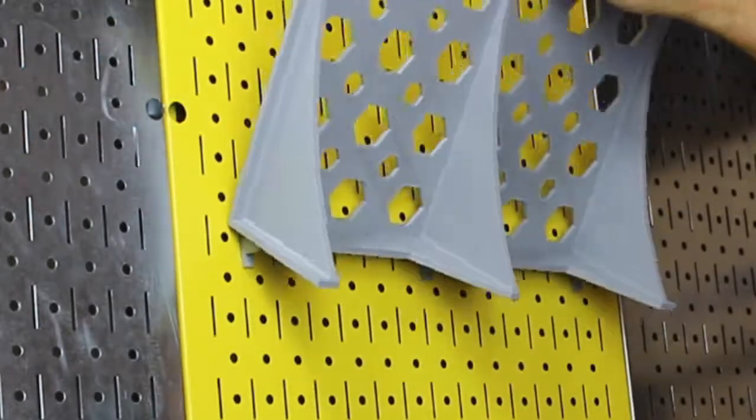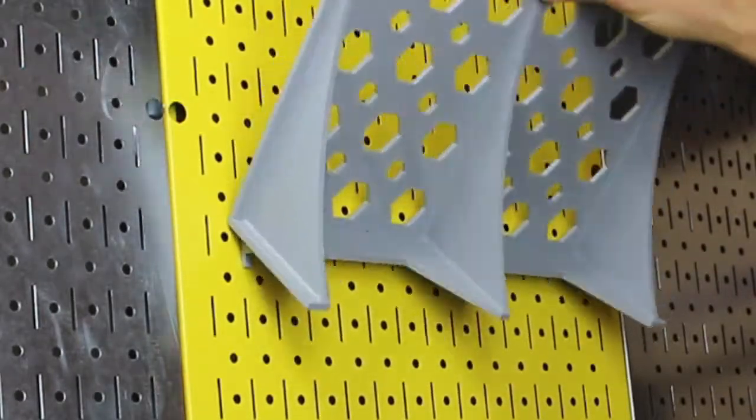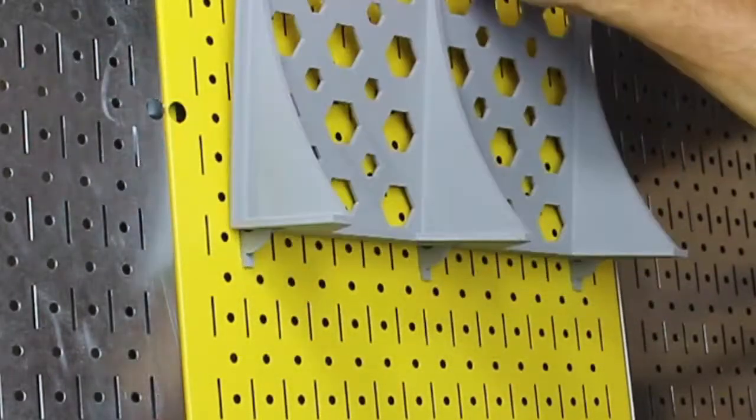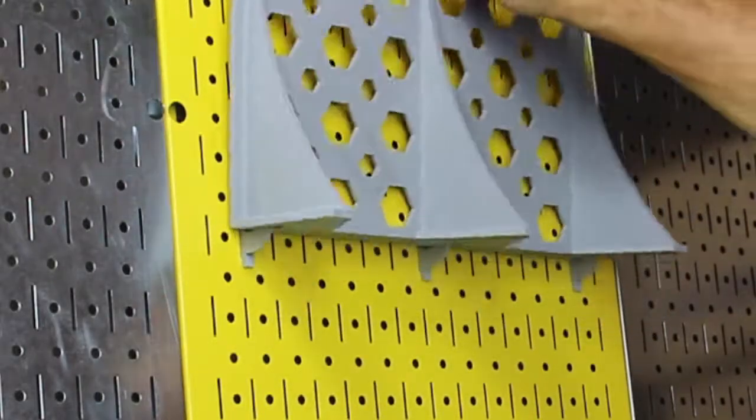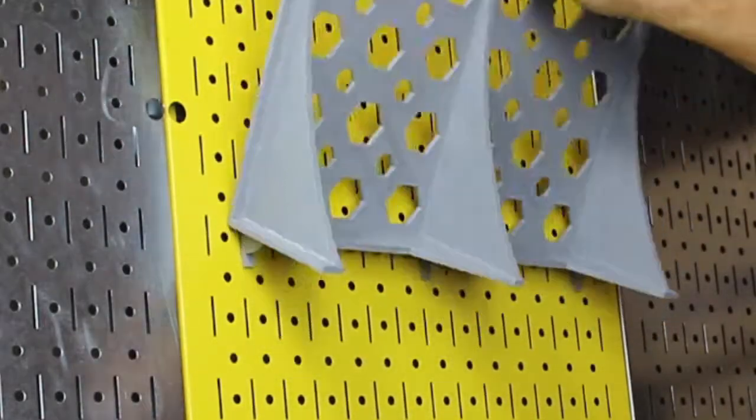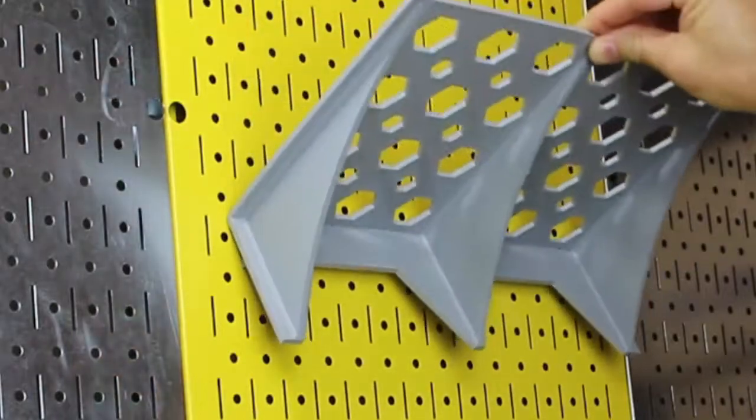As you rock the shelf back and forth along this curve, be sure that you're pressing the shelf down and toward the clips so that the back of the shelf remains in contact with the clip's fences.